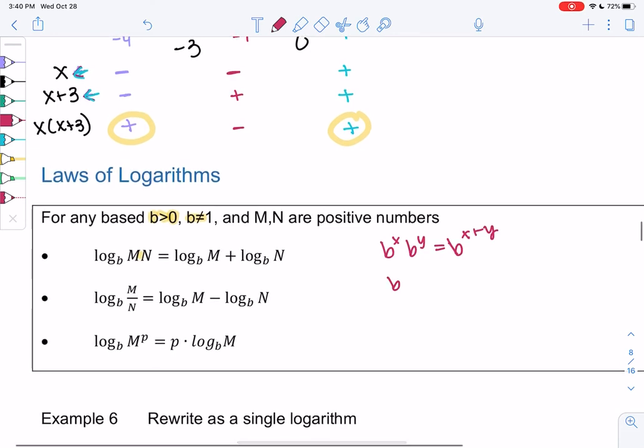And then same with division. b to the x over b to the y, we subtract powers. So it's a similar concept. When I have division inside of a log, I can separate them by subtraction. And then the final property is probably the most useful. If I have log base b of m to a power, you can actually bring the power out front. And it's no longer a power. So that will be the most useful one.